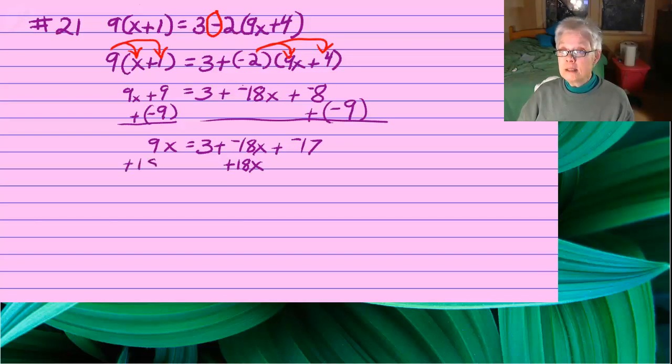I'll add 18x to both sides in order to zero out the negative 18x on the right. That will give me 27x on the left, and 3 plus negative 17 is negative 14.